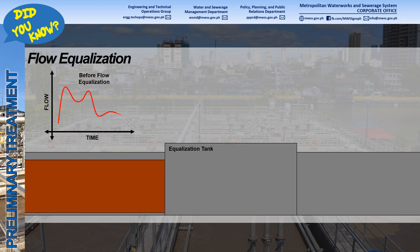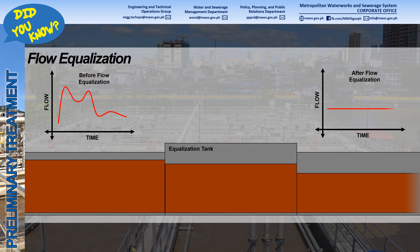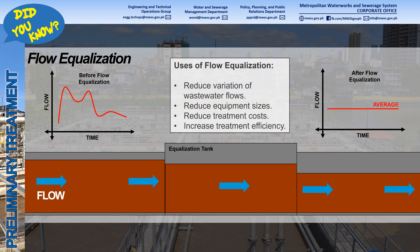The flow of raw wastewater varies from time to time. Varying wastewater flows can cause inconsistent treatment efficiencies and improper equipment sizes. After screening, flow equalization is used to reduce variation of wastewater flows, equipment sizes, and treatment costs, while increasing treatment efficiency.